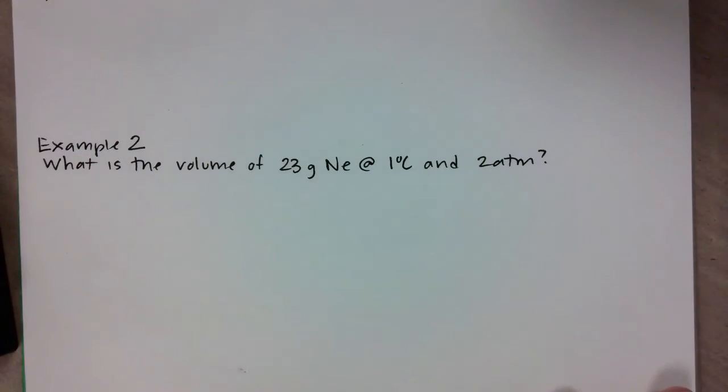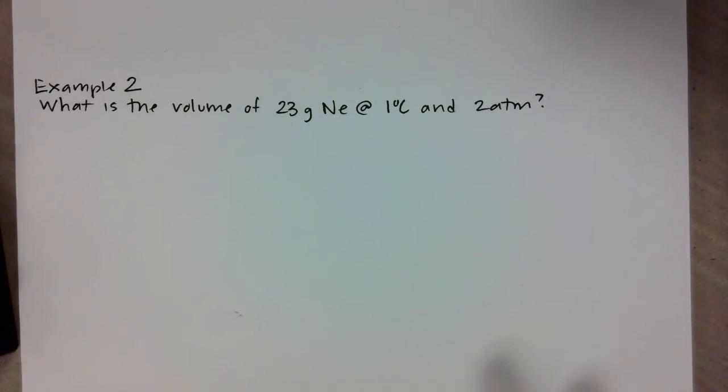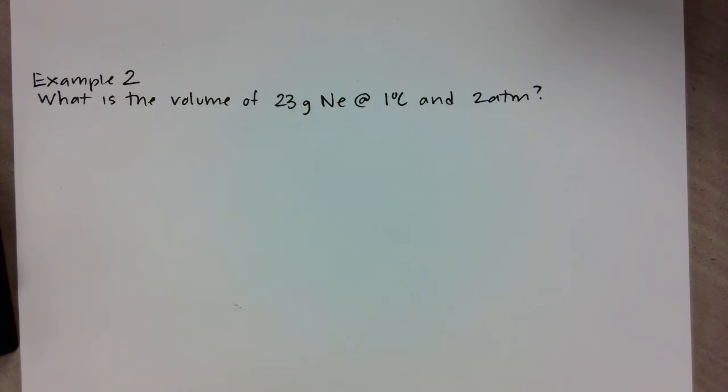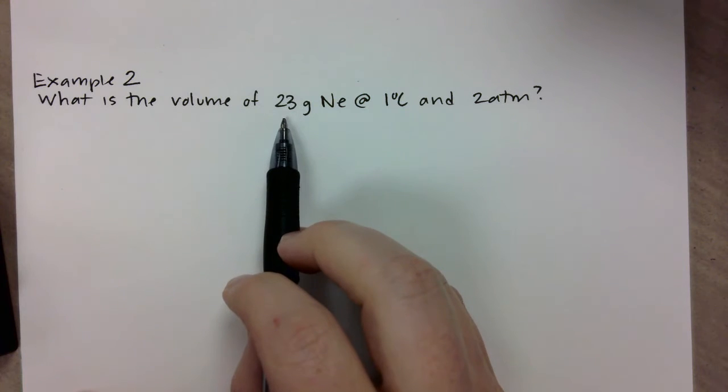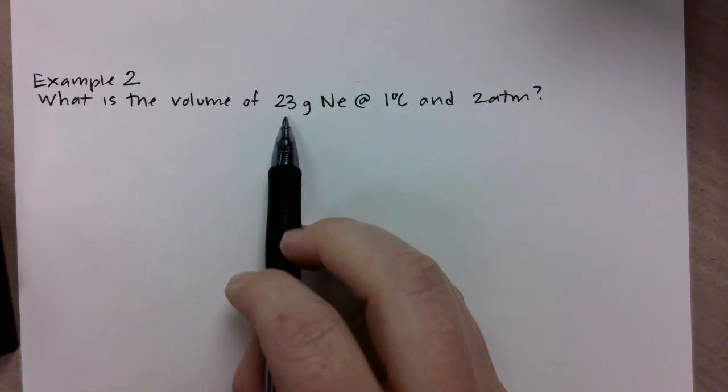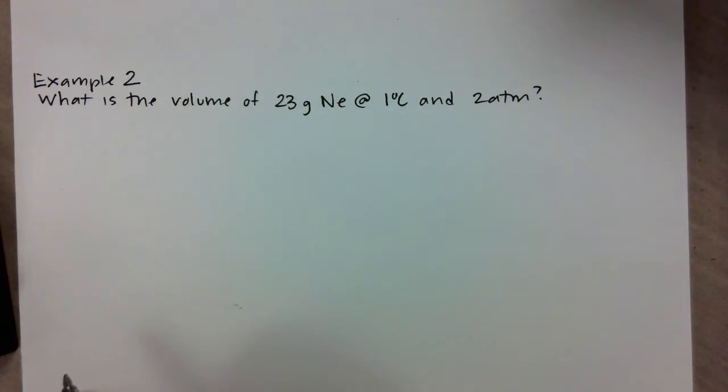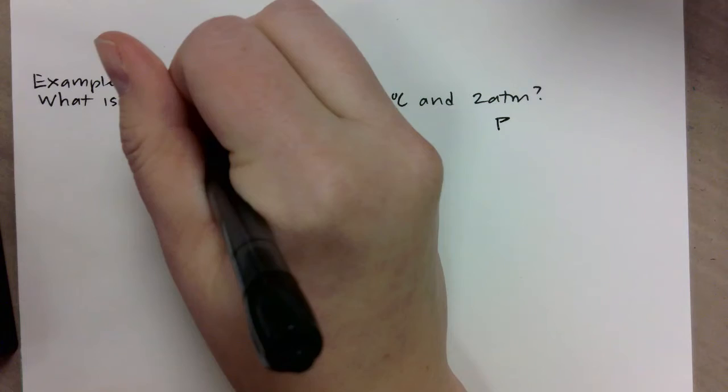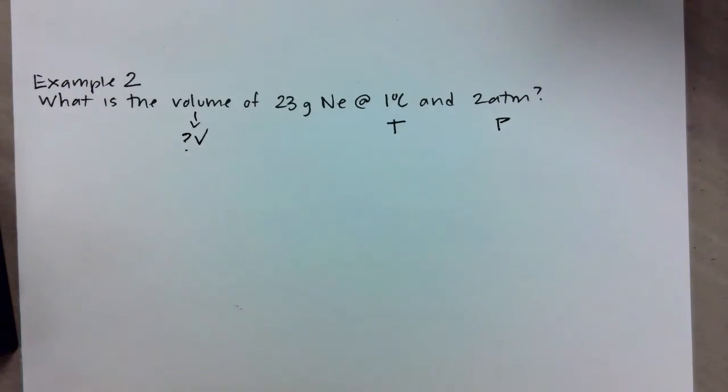The second one is: what is the volume of 23 grams of neon at 1 degree Celsius and 2 atmospheres? Usually on an AP exam they're gonna give you a lot more text, but I want to give you the basics of the problem. Let's read through and see what we know. We have a quantity of gas but it's in grams, so that's not super useful right now. I have a temperature and I have a pressure. It's asking me to find my volume, so I've got V, T, and P here, but I need to find my number of moles.